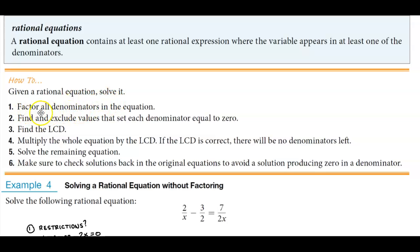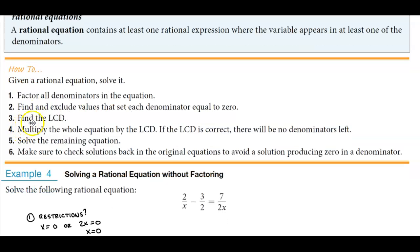Step 1: Factor all denominators in the equation if they need to be factored. Step 2: Find and exclude values that set each denominator equal to zero. Step 3: Find the LCD.